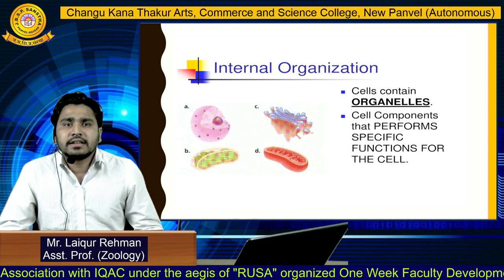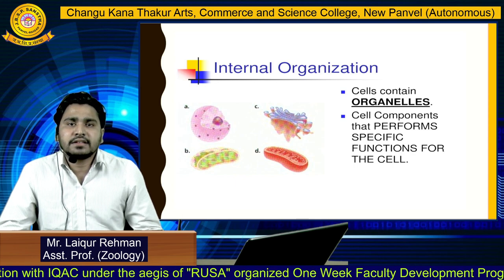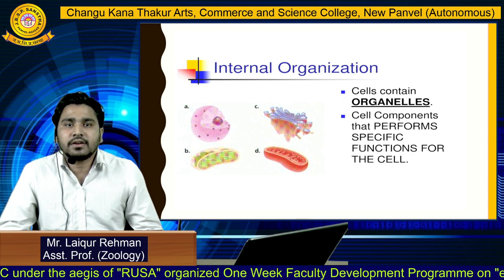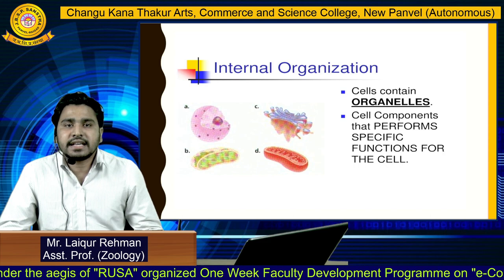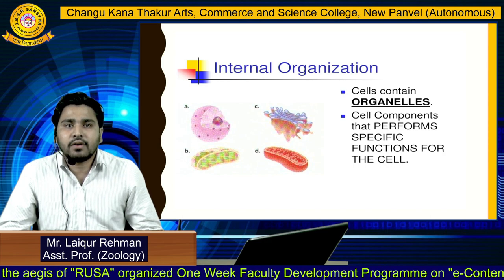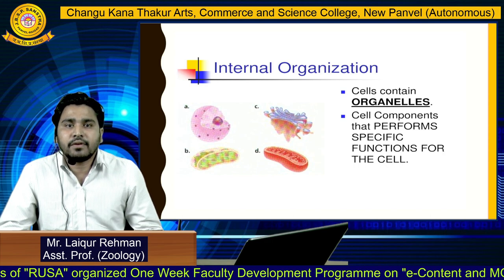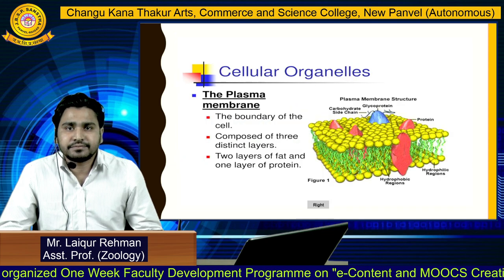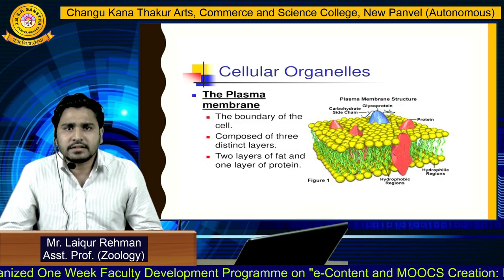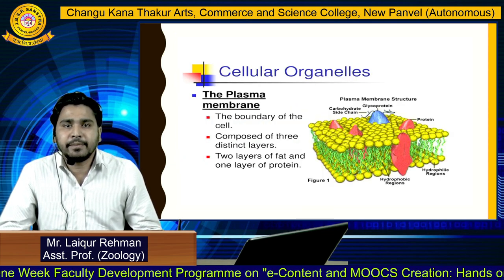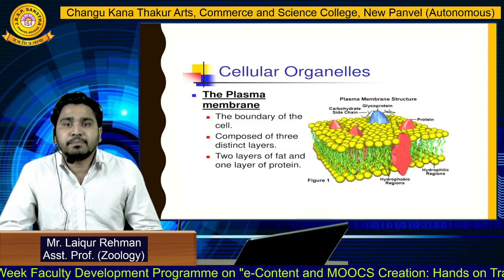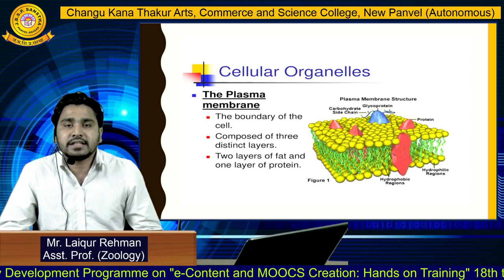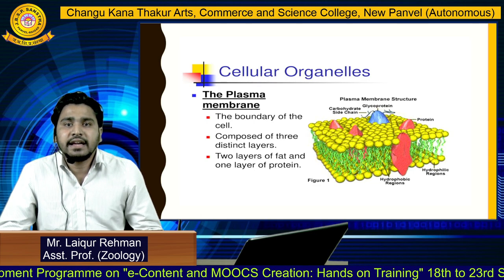Now we'll look at the internal organization of cells. A cell contains organelles — just as we studied, like human organs, cells also have organs that perform specific functions for the cell. First, we'll look at the plasma membrane, which is the boundary of the cell.